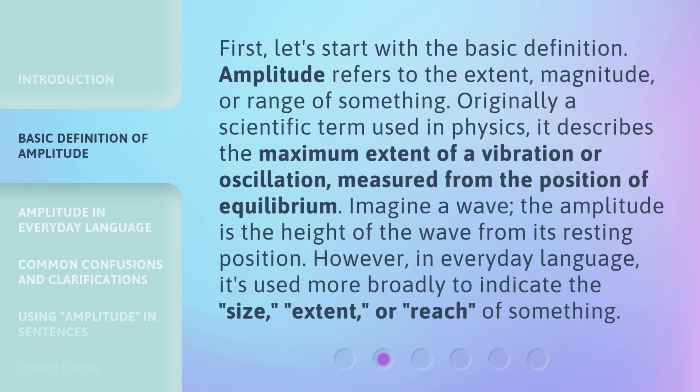First, let's start with the basic definition. Amplitude refers to the extent, magnitude, or range of something. Originally a scientific term used in physics, it describes the maximum extent of a vibration or oscillation measured from the position of equilibrium. Imagine a wave — the amplitude is the height of the wave from its resting position. However, in everyday language, it's used more broadly to indicate the size, extent, or reach of something.